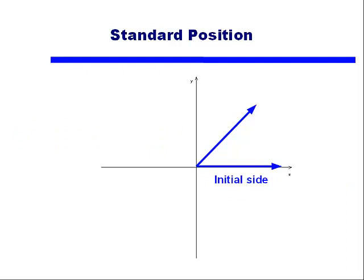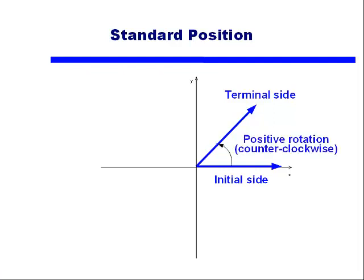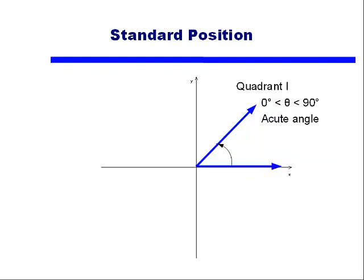We're going to add a bit of vocabulary here. That first side is also called our initial side. The second ray is called the terminal side — that's where the angle terminates. If we mark an angle like this, this is a positive rotation; it moves counterclockwise. If we have an angle between 0 and 360 degrees, we can tell what quadrant it will land in.